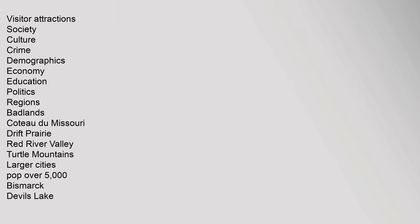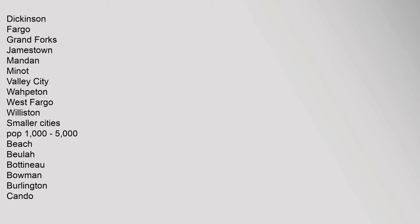External links — Visitor attractions, society, culture, crime, demographics, economy, education, politics, regions including Badlands, Coteau du Missouri, Drift Prairie, Red River Valley, and Turtle Mountains. Larger cities (population over 5,000): Bismarck, Devil's Lake, Dickinson, Fargo, Grand Forks, Jamestown, Mandan, Minot, Valley City, West Fargo, and Williston.